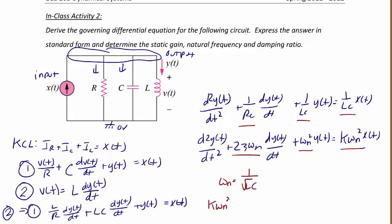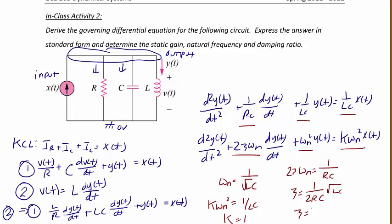Since K omega n squared also equals 1 over LC, the static gain K equals 1, the same as before. Since 2 zeta omega sub n equals 1 over RC, zeta equals 1 over 2RC times the square root of LC, which simplifies to 1 over 2R times the square root of L over C.